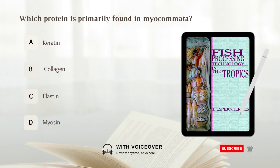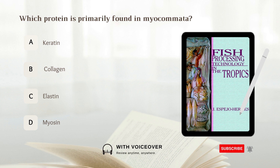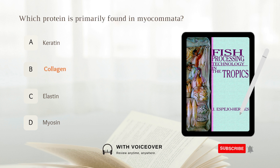Which protein is primarily found in myocomata? A. Keratin, B. Collagen, C. Elastin, D. Myosin. Answer: B. Collagen. Collagen is the protein primarily found in myocomata.